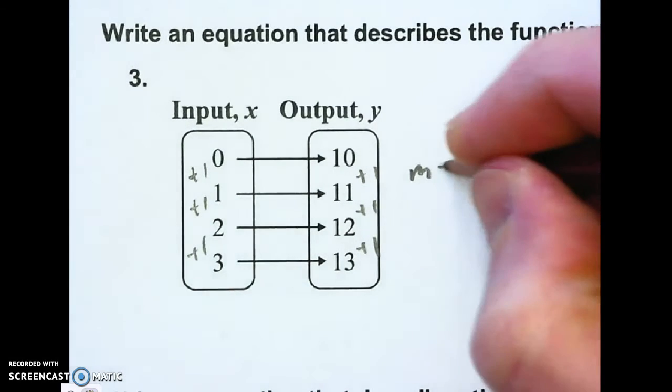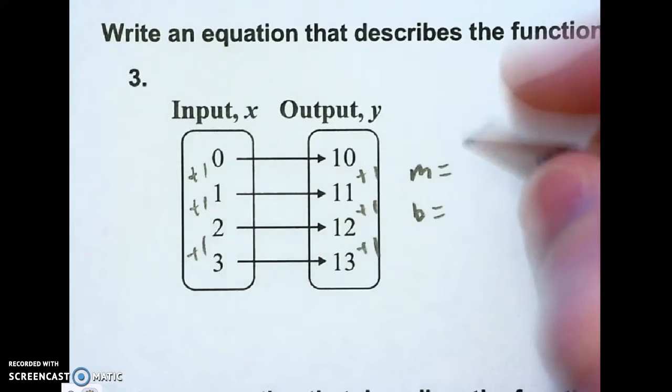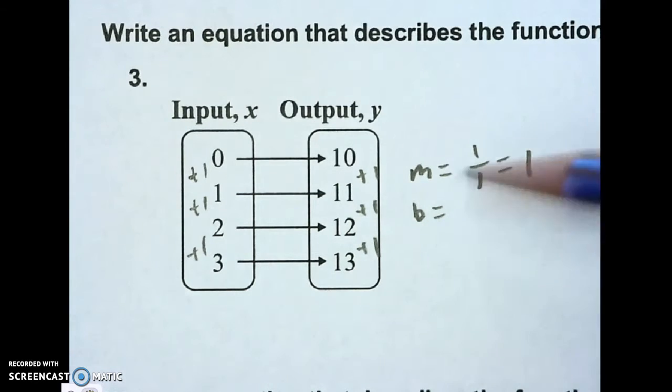So I'm going to write m equals over here and b equals. I'm just going to fill both of those in. I know my slope is 1 over 1, which is just 1, y over x.